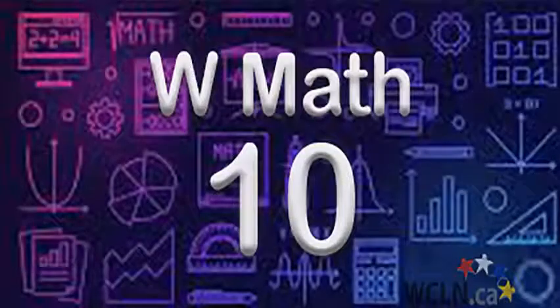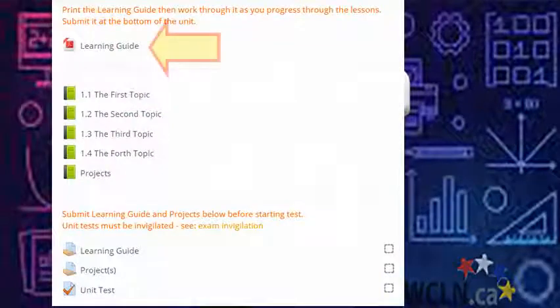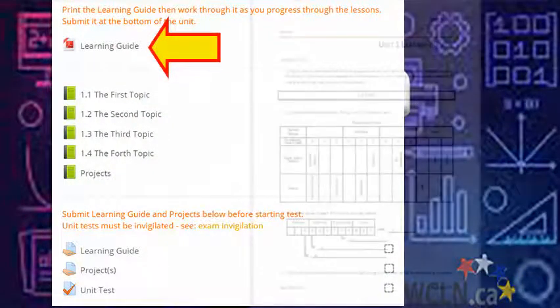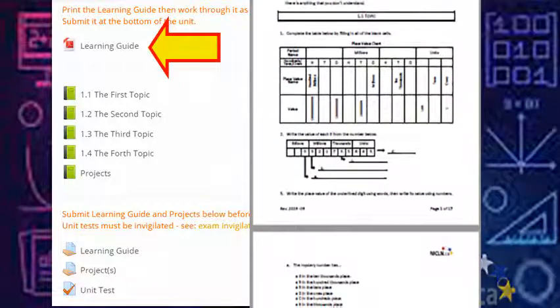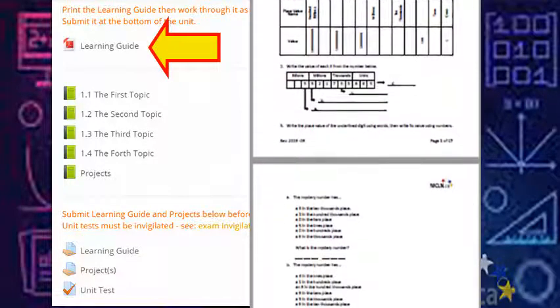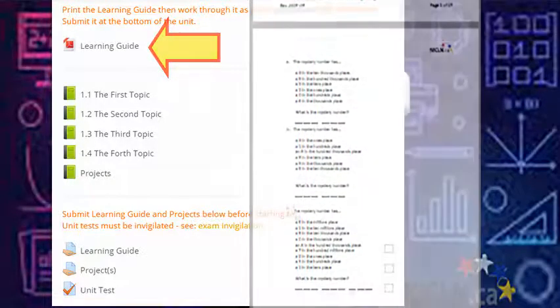Once ready to get started with the course content, head into the first unit. At the top of the unit, you'll find a learning guide. As you work through the lessons, you'll be using the learning guide to help you take notes and practice new skills. Keep your learning guide neat and well organized so it's ready for submission at the end of the unit.